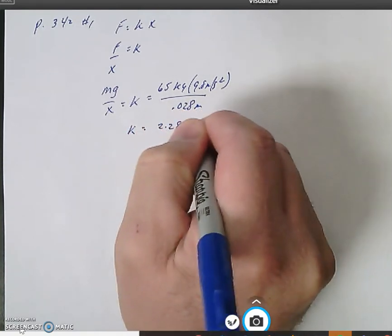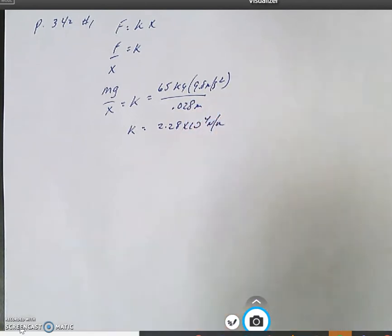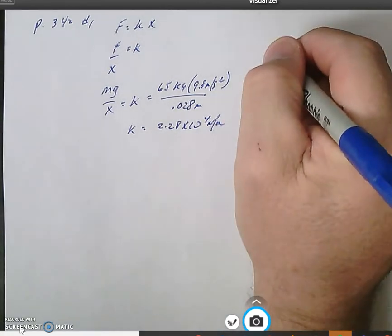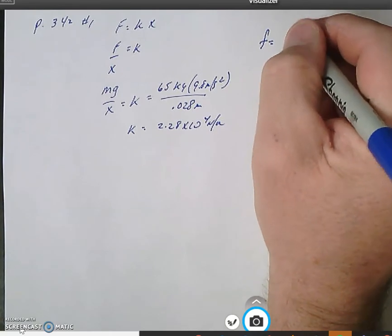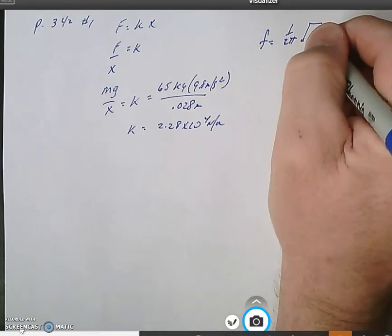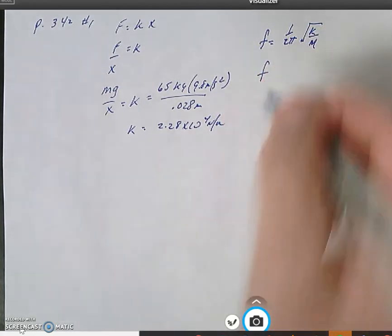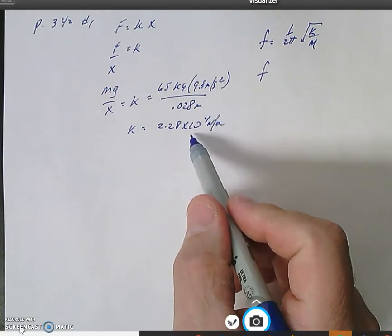And of course the frequency of oscillation for a spring, f equals 1 over 2π square root k over m. And then obviously we're going to substitute this for our k value.